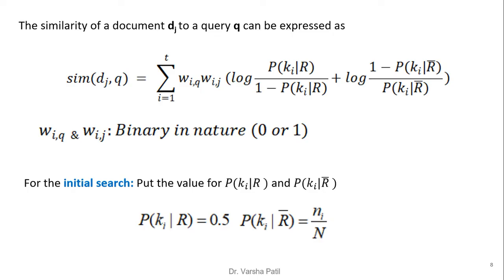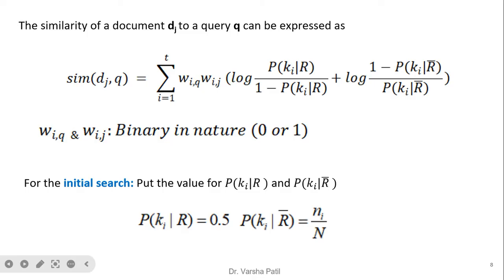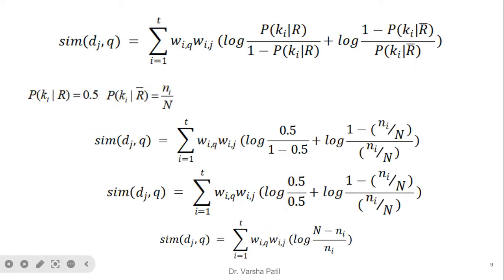The similarity of document Dj to query Q can be expressed using this equation, where WiQ and WiJ are binary — either present or absent. The keyword must be present in both query and document. For the initial search, we use P(Ki|R) = 0.5 and Ni/N. Substituting these probability values into the original equation and simplifying, we get the final equation: summation from 1 to T of WiQ · WiJ · log((N - Ni) / Ni). This is the equation used for the first retrieval.